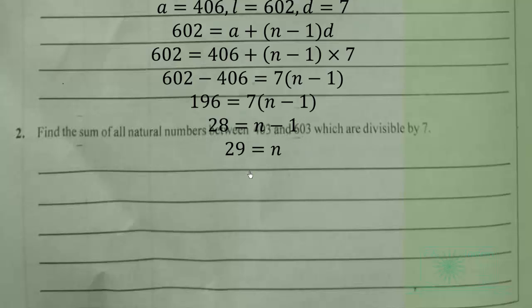Next, we can find the sum by using this formula: n/2 times (a + l).